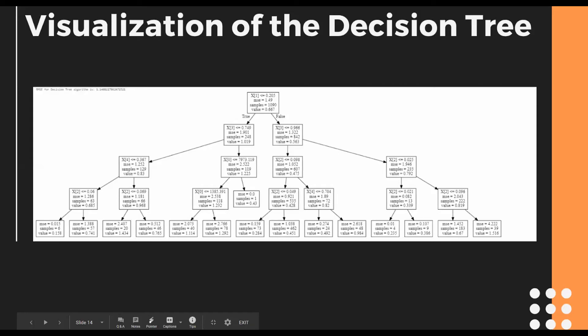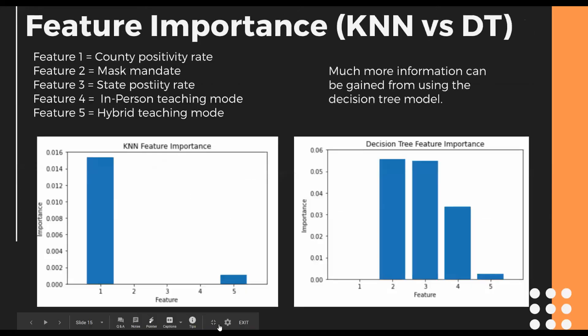Here's a visualization of our decision tree algorithm showing what splitting decisions were made at each node. Another thing we can glean from our models is feature importance. Feature 1 — the number of cases in each school's county per capita — was the main driver of the KNN algorithm. In contrast, features 2, 3, and 4 — whether the county had a mask mandate, the state's COVID positivity rate, and the effect of in-person versus online classes — were the main drivers of the decision tree algorithm.